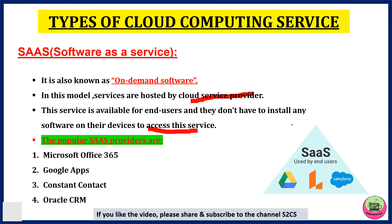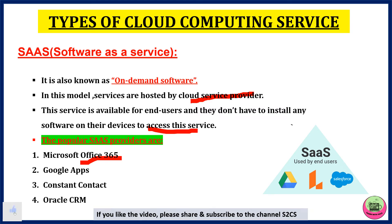The popular SaaS providers are Microsoft Office 365 — the online office suite — then Google apps like Gmail, Google Calendar, and Google Docs. Then Constant Contact, which provides services like email marketing and online surveys, and lastly Oracle CRP. I hope you are clear with SaaS.